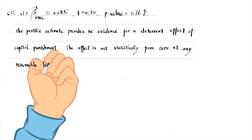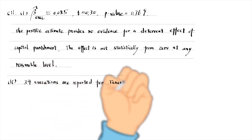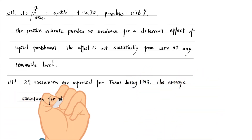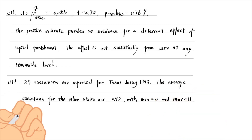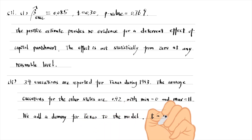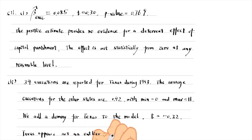For part 2, 34 executions are reported for Texas during 1993. The average number of executions for the other states is 0.92, with a minimum of zero and a maximum of 11. We add a dummy variable for Texas to the model. The t-statistic for the dummy is not large, minus 0.32. Texas appears not to be an outlier.